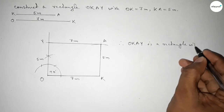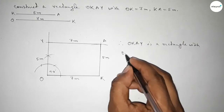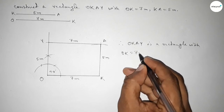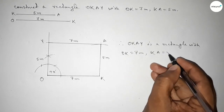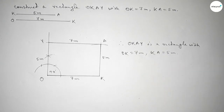Rectangle OKAY has OK equal to 7 centimeters and KA equal to 5 centimeters. That's all — thanks for watching. If this video is helpful to you, please share it with your friends.